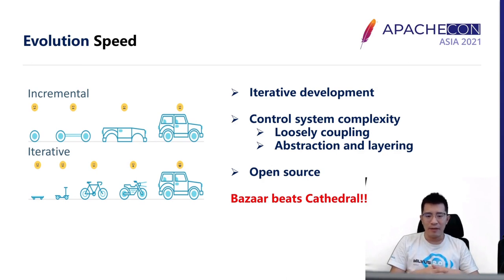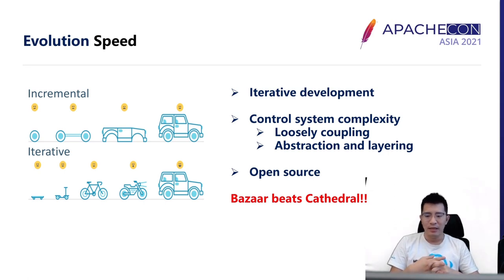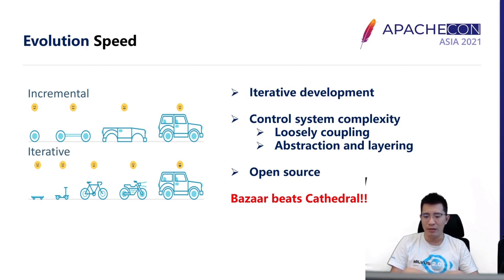After doing open source for many years, we find that the lifeline of infrastructure software is iteration speed. The first thing we do is converge from an incremental design into iterative development, so users can always get first-hand functionalities. They can use it, test it, and give feedback. Then we can decide how to improve.